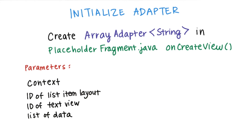First, for context — it contains global information about the app environment. It allows us to access system services and resources, as well as the application-specific resources that we've defined. We use the fragment's containing activity as a context, so we're going to call getActivity() for our parameter here.